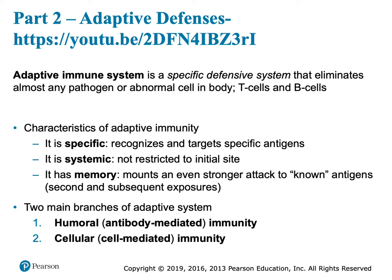You have some other chemicals being released — for example, prostaglandin. Don't memorize that, but it also invokes an inflammatory response with pain and heat. So it's complicated, but in a nutshell: swelling, redness, heat, pain — those are all signs of inflammation, which is a secondary innate defense.